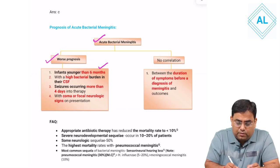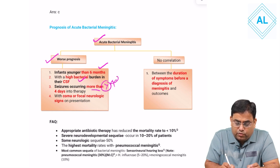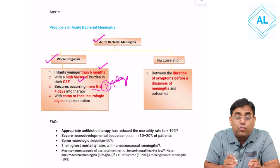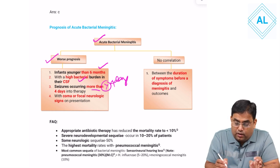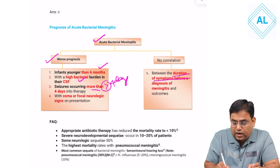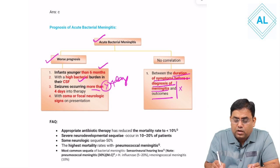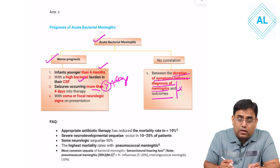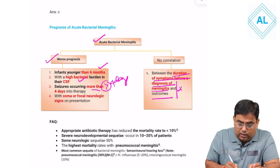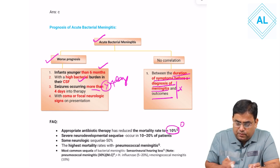Bad prognostic factors include: less than 6 months age, high bacterial burden, seizure occurring more than 4 days into therapy, and coma or focal neurologic signs on presentation. Importantly, there is no correlation between duration of symptoms before diagnosis of meningitis and outcomes — this should be remembered.